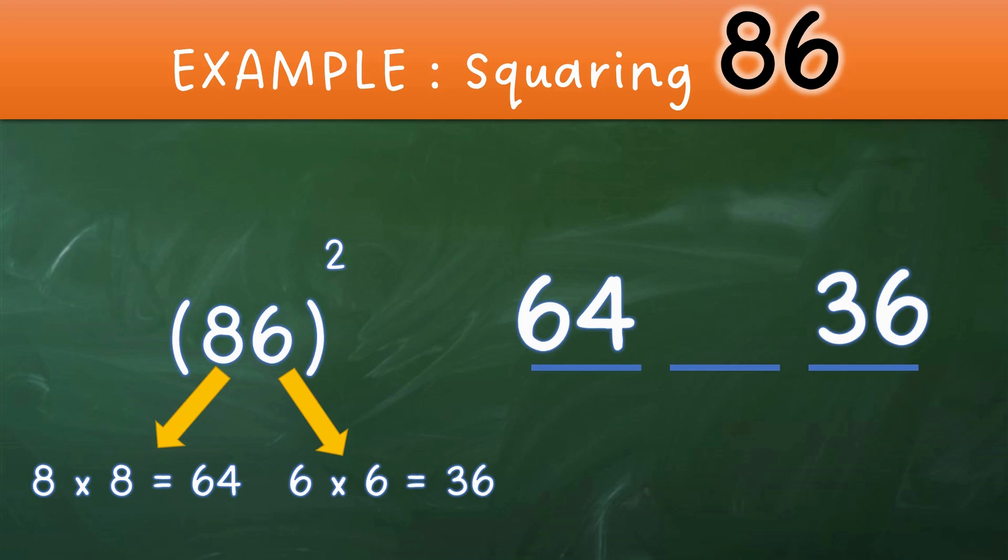The complexity in this example is that we have double digit numbers in our left side blank and right side blank. The third step is to multiply all three digits to get the middle number: 8 multiplied by 6 multiplied by 2, giving us 96. That is another two digit number, so this is how it is different from the first example.